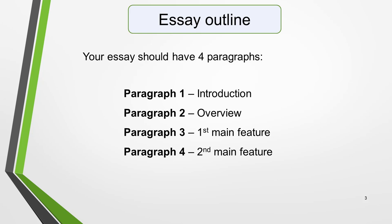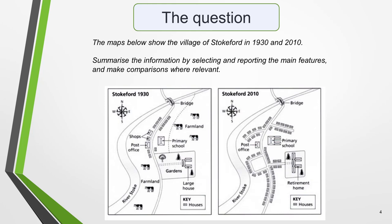We now have everything we need to begin planning and writing our map essay. Here's our practice question. The map below shows the village of Stokeford in 1930 and 2010. Summarise the information by selecting and reporting the main features, and make comparisons where relevant. Write at least 150 words.